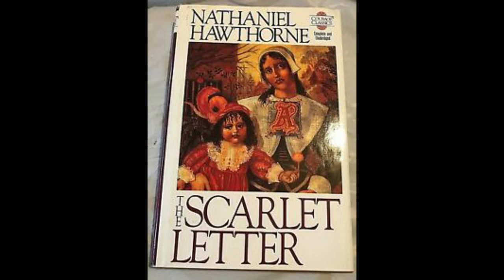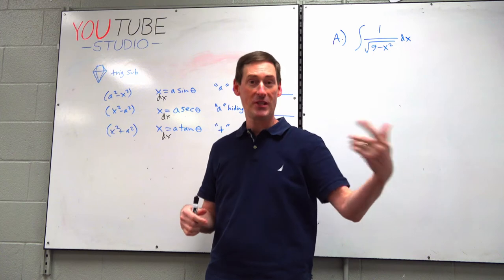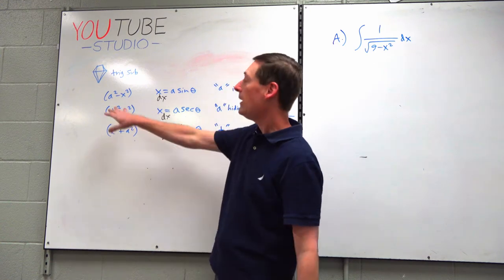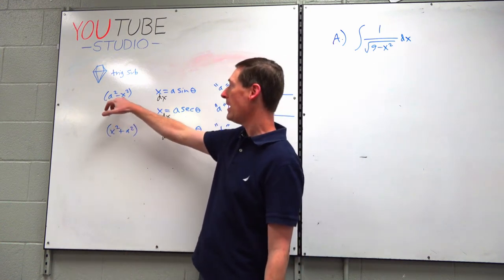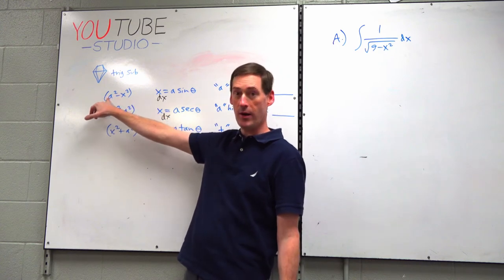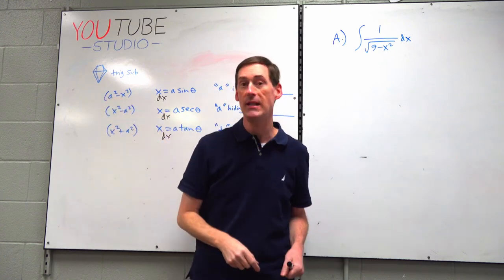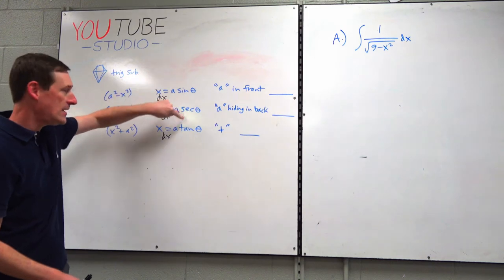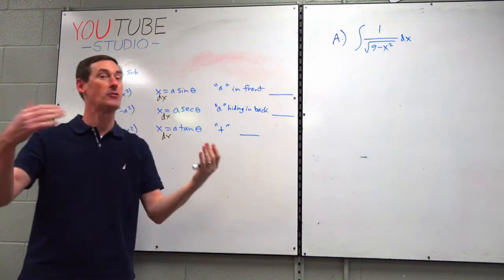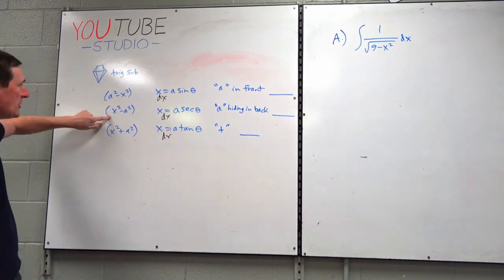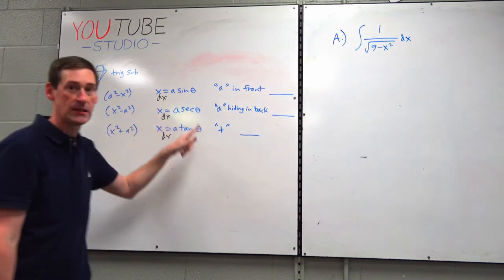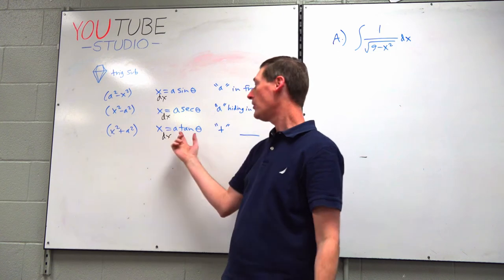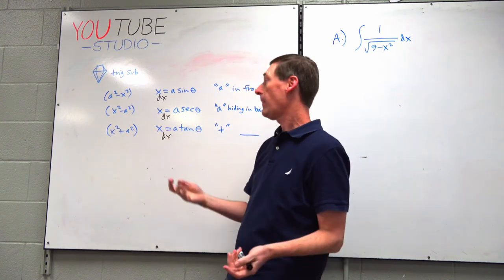The tie-in to The Scarlet Letter — I've heard of one or two professors using this mnemonic device; you won't find it in books or on the internet. If you see a² minus x² (a constant squared minus a variable squared), you use sine. If you see x² minus a constant squared, you use secant. If you see x² plus a², you use tangent.